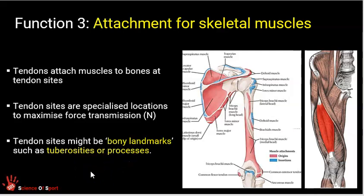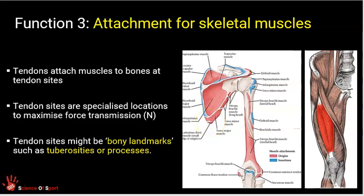The spinous processes of the vertebral column — the pointy parts of the vertebrae — are for ligament and muscular attachments. The erector spinae runs all the way up the back of the spine and attaches to many of these vertebral processes. The scapula, or shoulder blade, is a large flat bone whose large surface area provides a huge area for muscle attachment. A lot of musculature attaches to the scapula, making that flat bone particularly suited for this function.